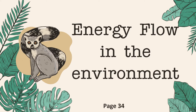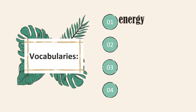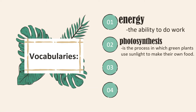Before we proceed, let's learn some vocabularies for you to better understand our topic. Let's start with energy. Energy is the ability to do work — it is how things change and move. The next word is photosynthesis. Photosynthesis is the process in which green plants use sunlight to make their own food.